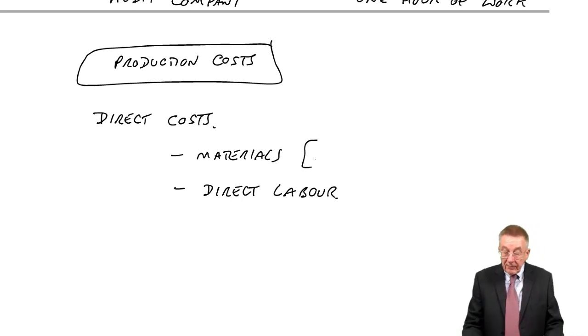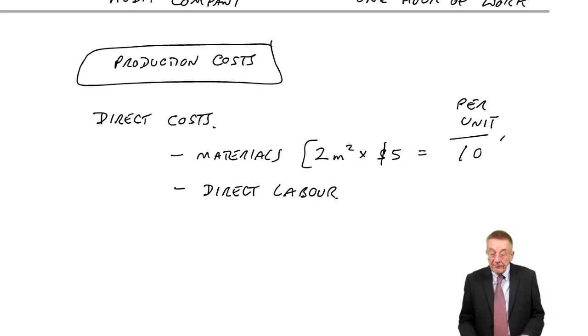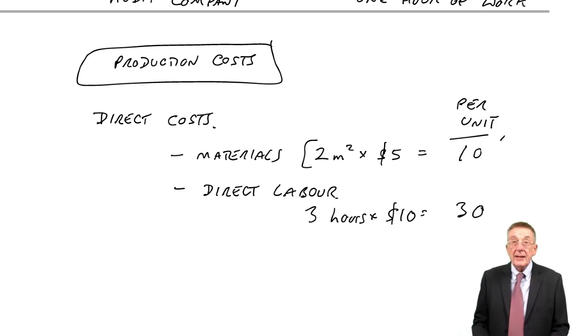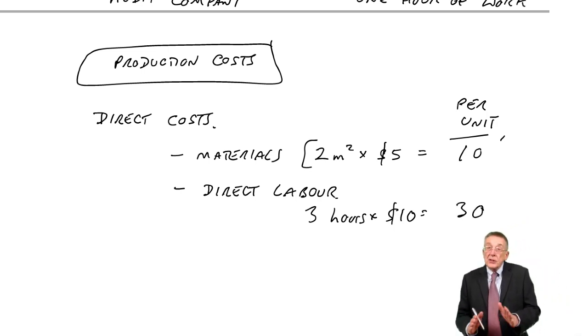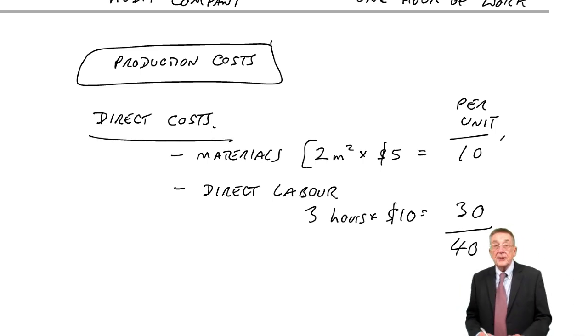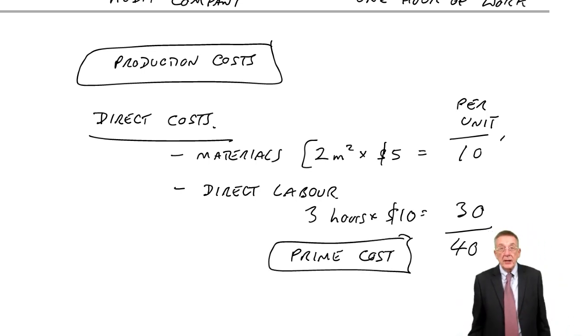And those two together, we call the prime cost. So you see materials, maybe it is two square metres and it's five dollars a square metre. So per unit, per desk, ten dollars. Now maybe the labour. I can't remember what I said before, but let's say it's three hours. And we pay them ten dollars an hour. That's 30. And so the total cost so far is 40. These are the direct costs. And the total, that 40, is called the prime cost. So it's only terminology. The direct costs and the total of them is the prime cost.